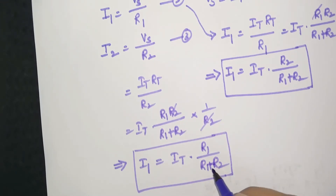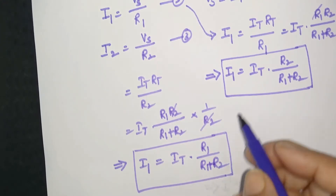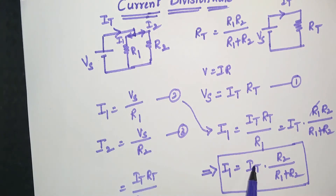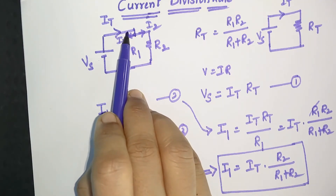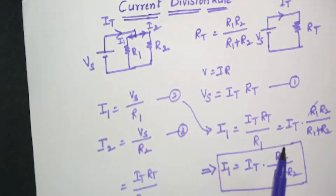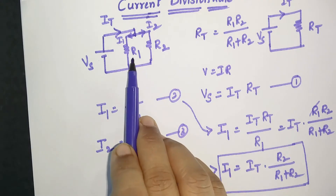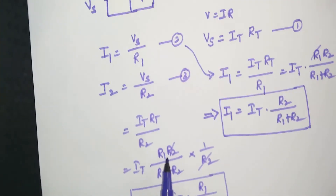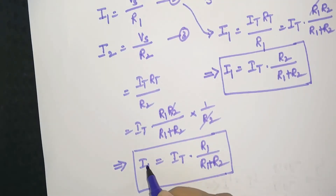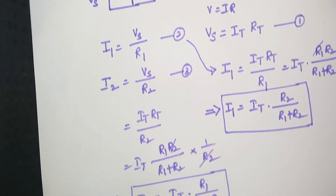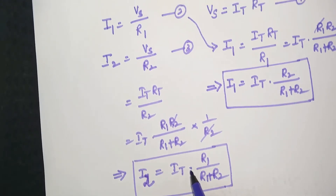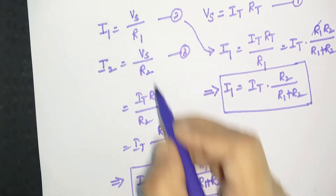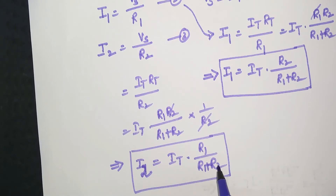Let us see the pattern behind these relations. I1 is the first branch current equal to total current IT multiplied by the opposite branch resistance R2, divided by the sum of resistances (R1 + R2). The same pattern is observed for I2: it equals total current IT multiplied by the opposite branch resistance R1, divided by the sum (R1 + R2).